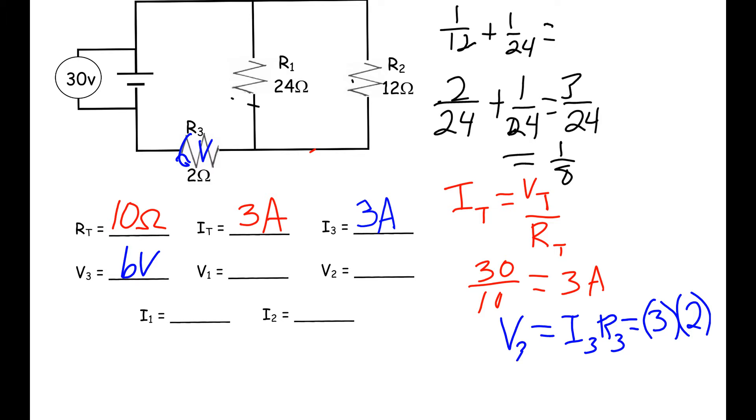We use the 2 to figure out what V1 is, because it's going to be our total minus our V3, because this is outside the branching. If we go around this way, this voltage plus this voltage equals the total.